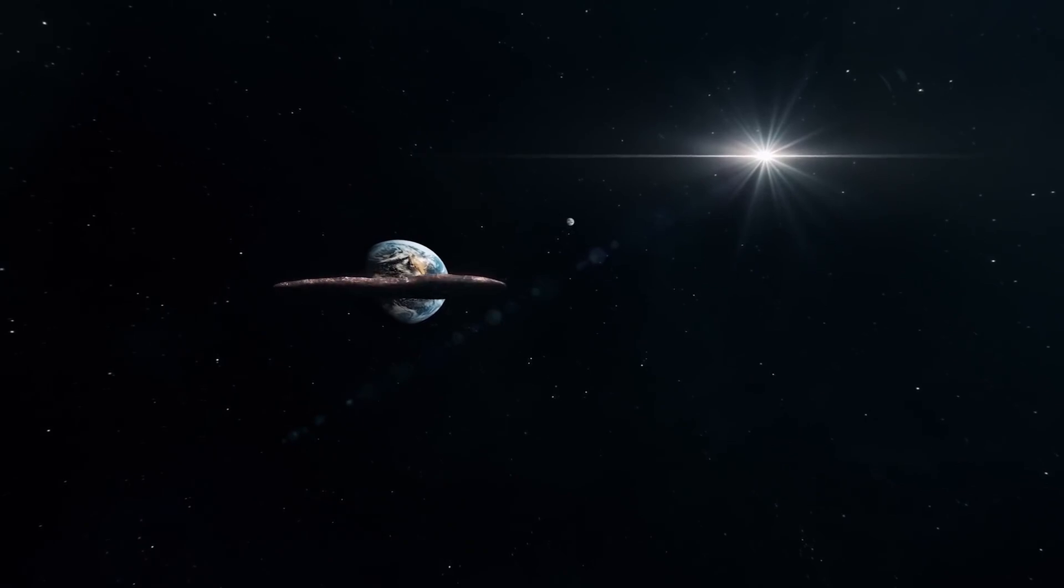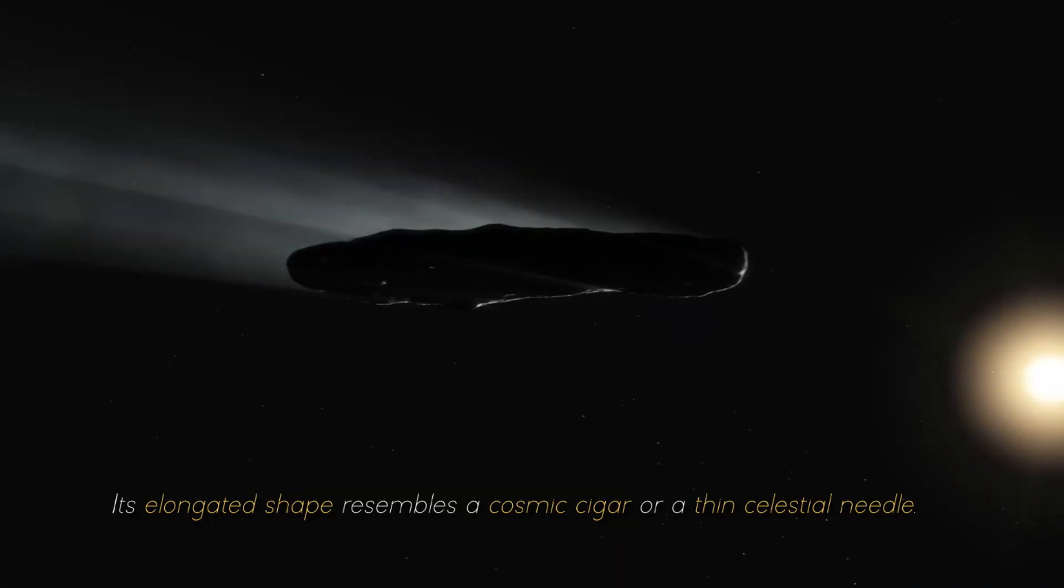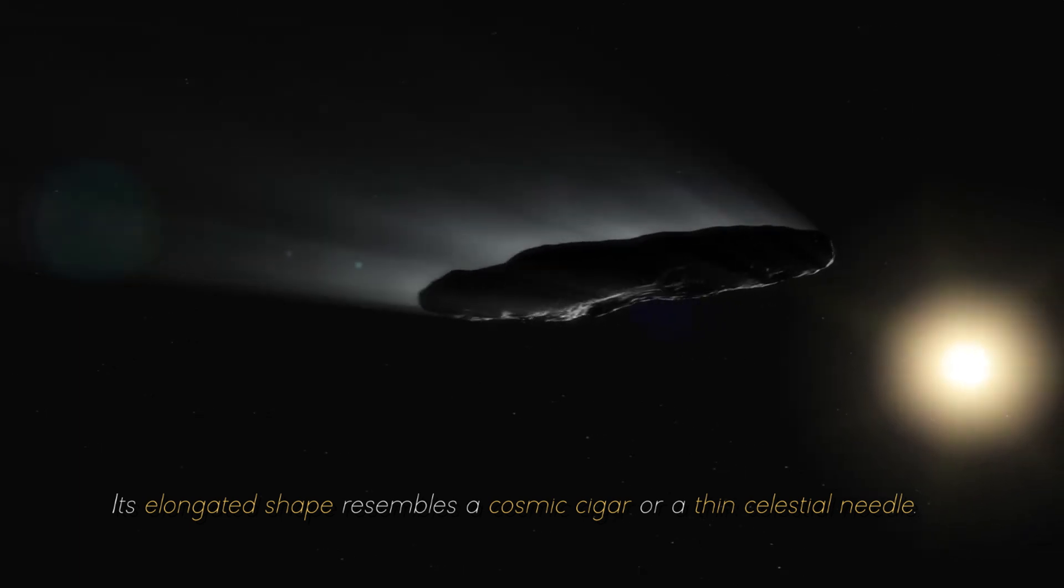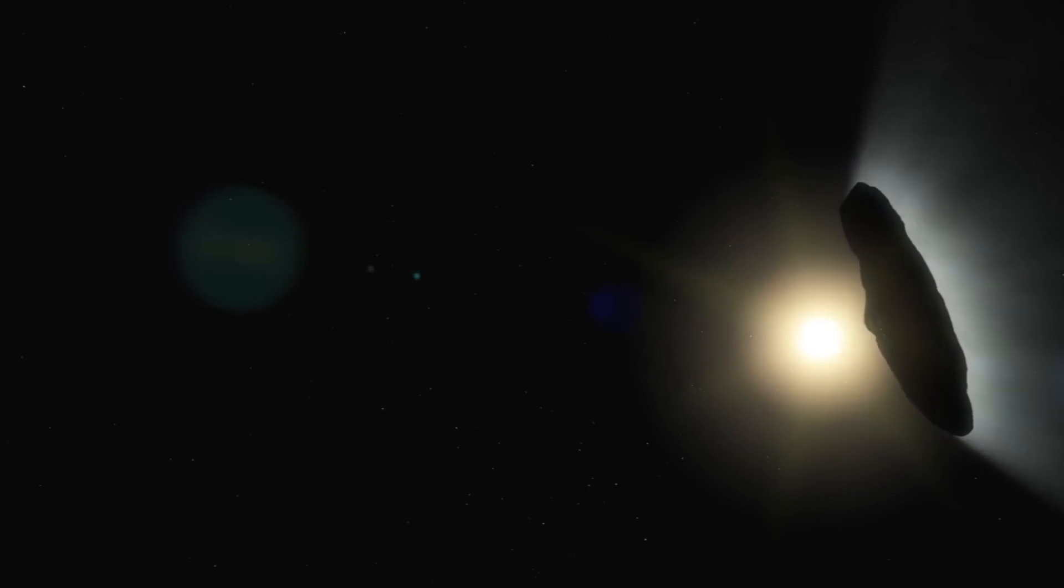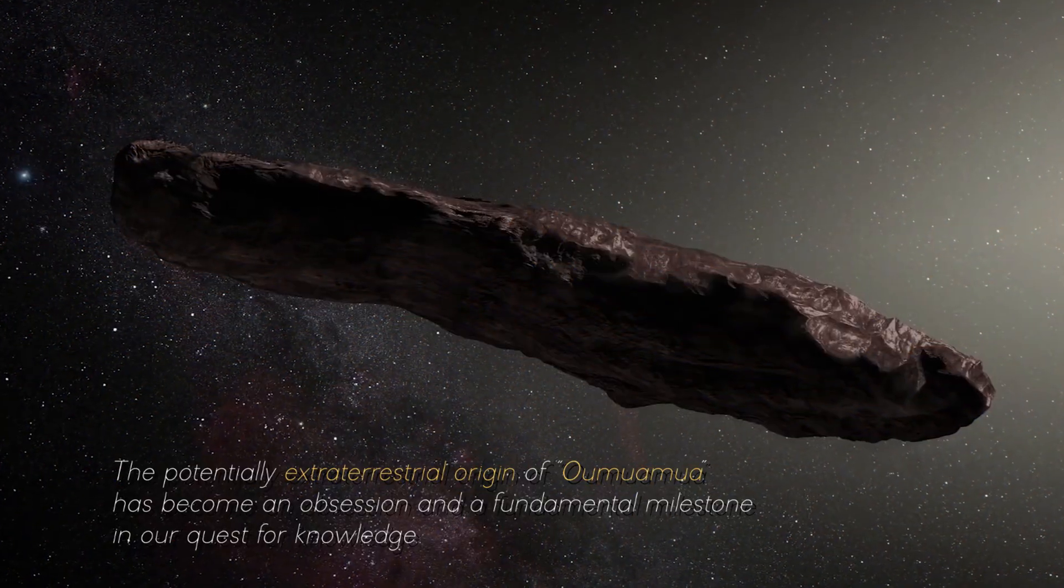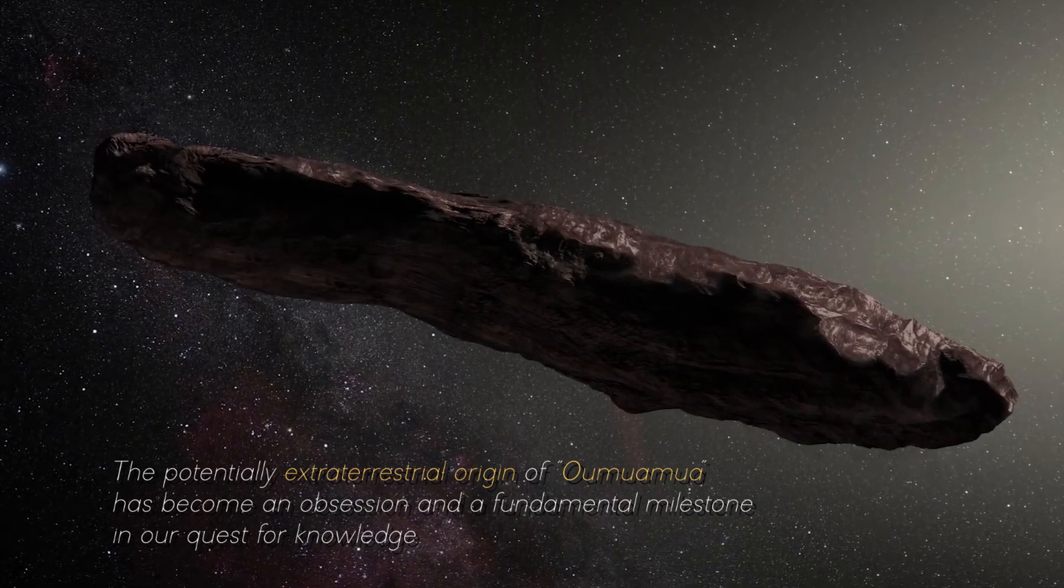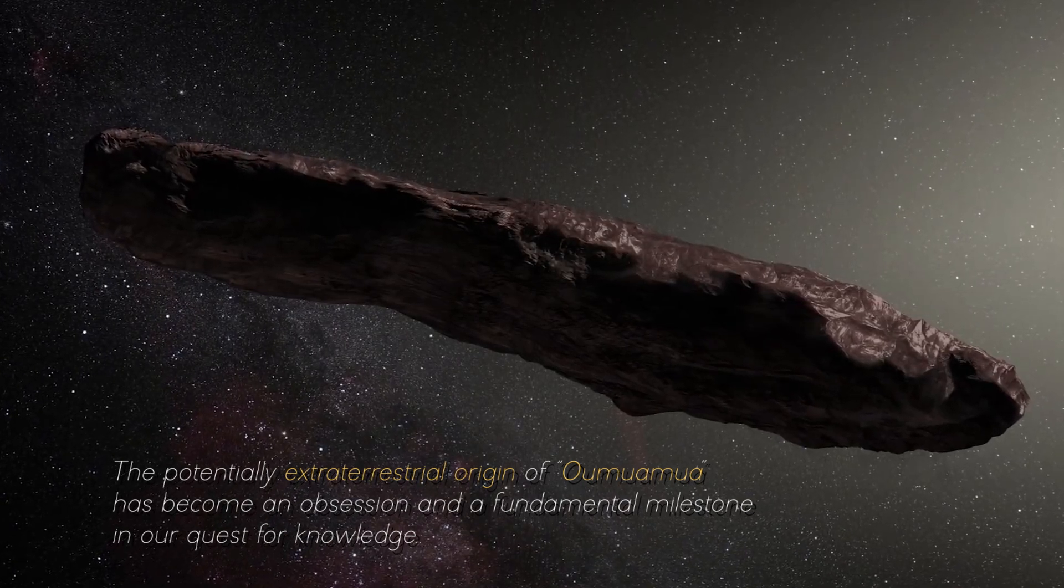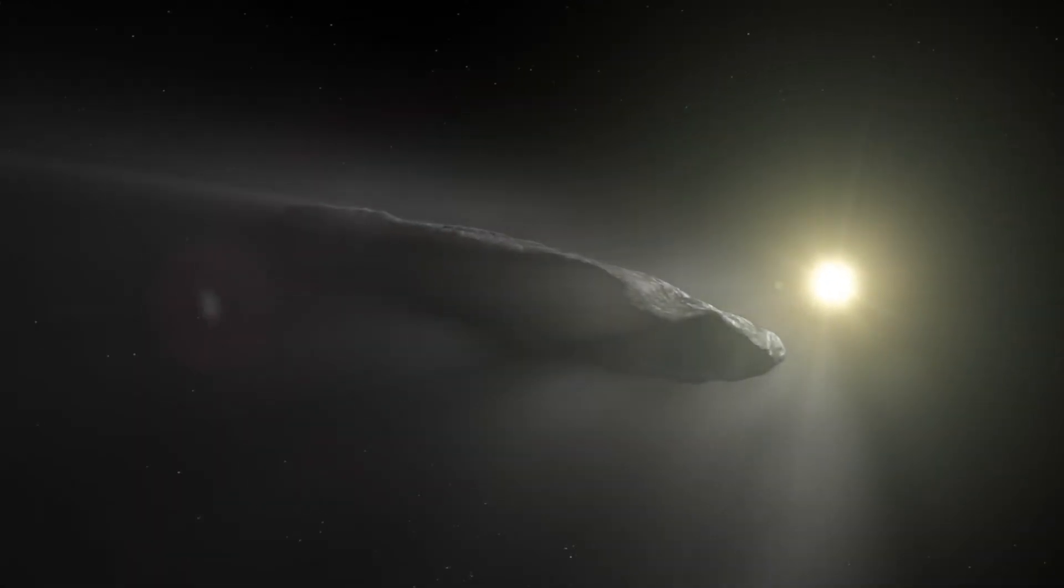Imagine a truly bizarre object emerging from the deepest corners of space. Its elongated shape resembles a cosmic cigar or a thin celestial needle, completely defying what we thought we knew. The potentially extraterrestrial origin of Oumuamua has become an obsession and a fundamental milestone in our quest for knowledge. However, the journey does not stop with a single image.